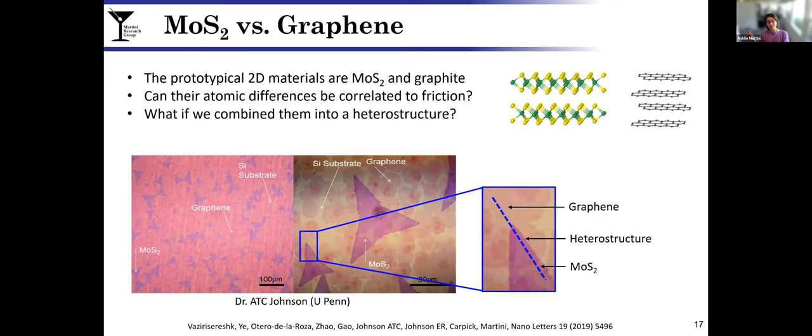Let's take this one step further. I titled this presentation MoS2 and beyond, so let's go one step beyond and try a comparison between MoS2 and graphene. These are the prototypical 2D materials. Their structures are shown here up on the right. They're both layered. Can we compare them, and more importantly, can we understand their differences as a means of getting back to the origin of friction?